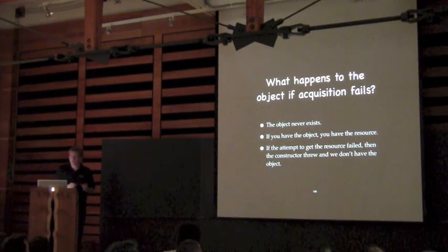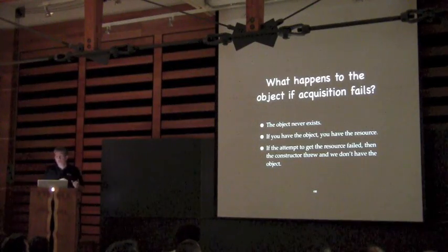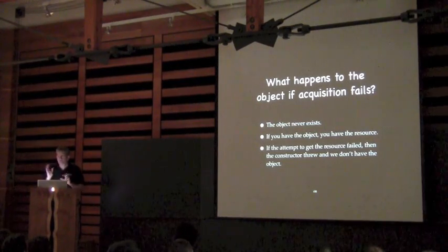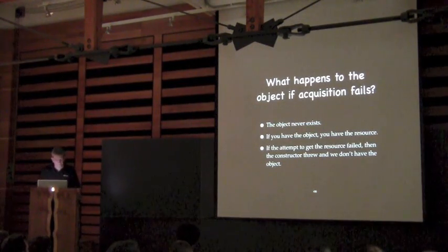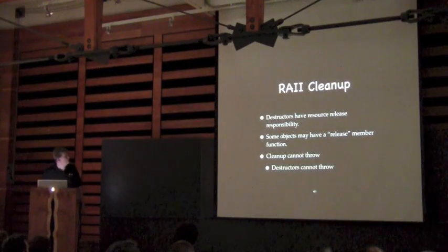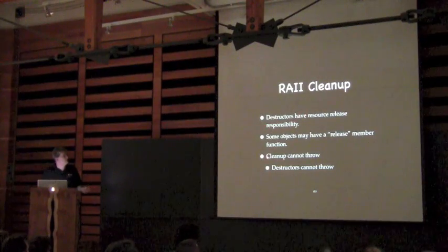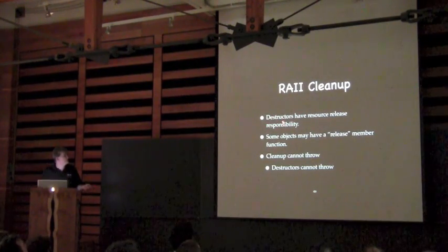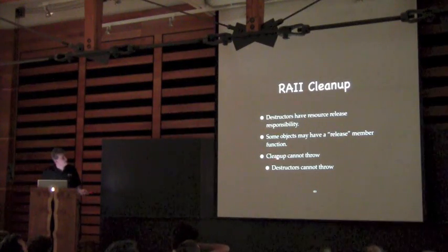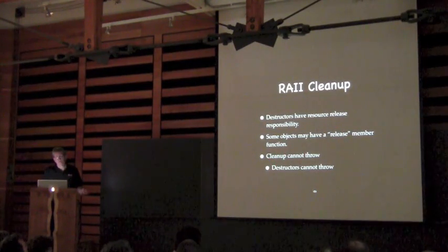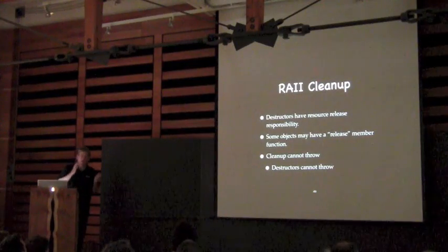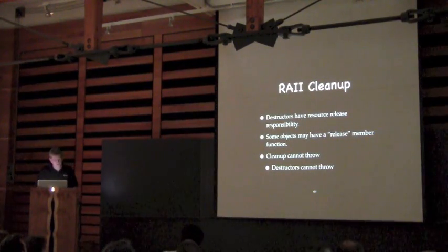If we have the object, we have the resource. And if for some reason we couldn't get the resource, we have an exception. The idea is that the destructors have the responsibility of doing cleanup. Remember what we said earlier: clean up cannot throw, destructors cannot throw. This is a fundamental requirement of being able to write exception-safe code.